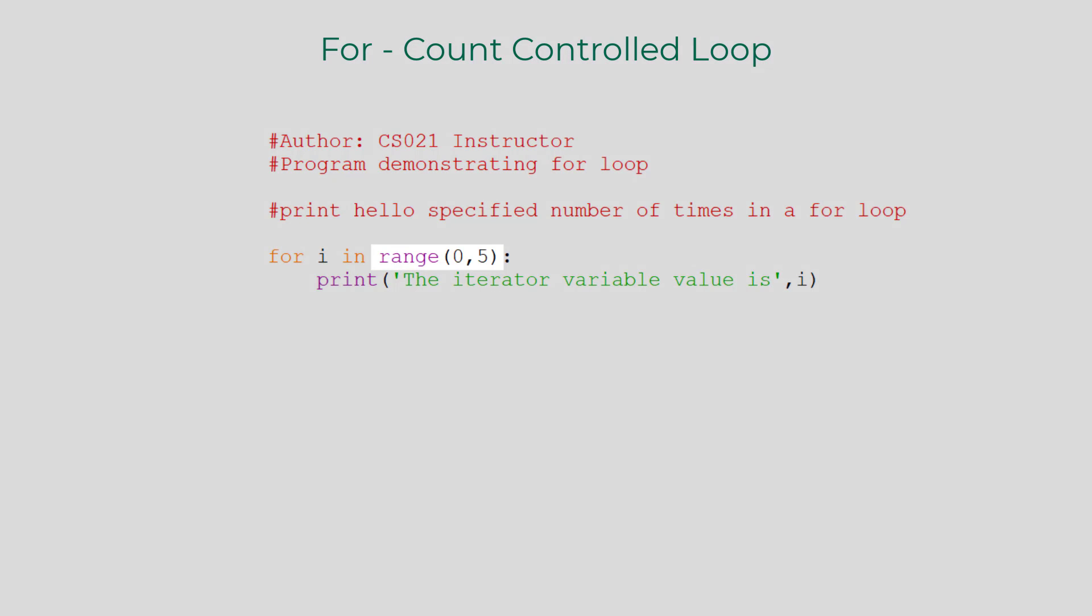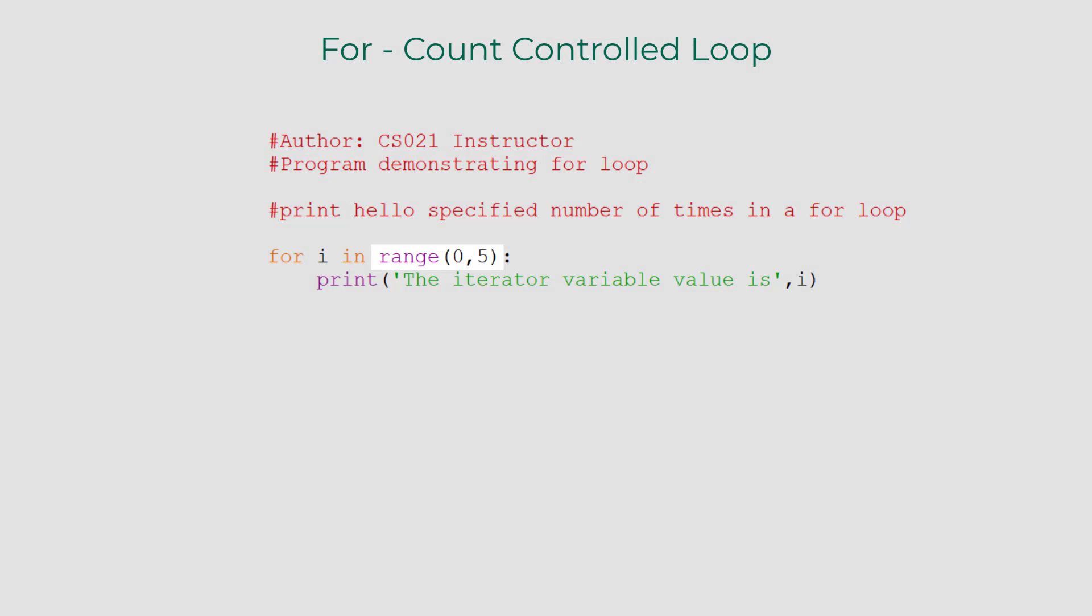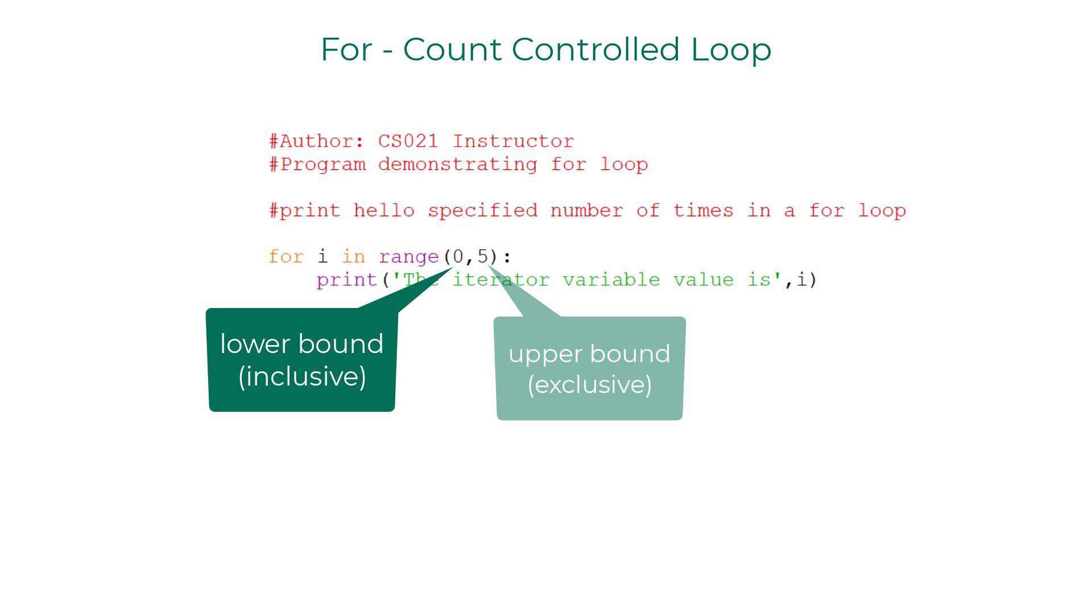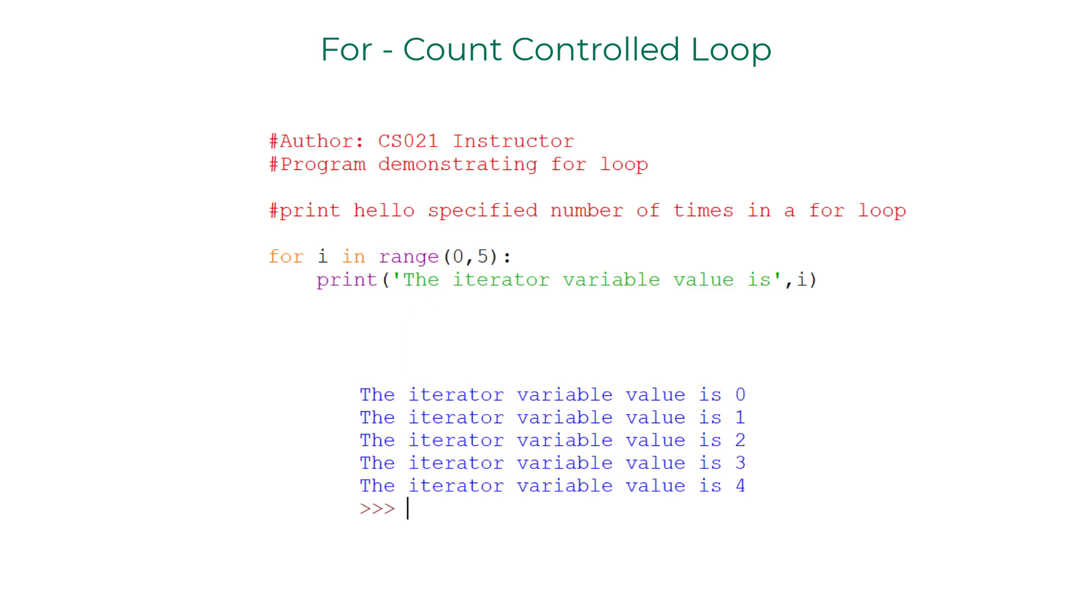The range function. With range you can specify the lower and upper bound values for the iterator variable and let it do its job. If you observe the displayed output closely, the iterator variable starts with the lower bound value 0, gets incremented by a value of 1, and then stops at 4.